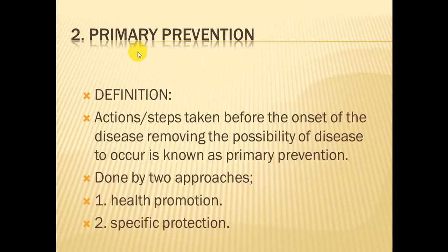The second level is primary prevention. Primary prevention is defined as actions or steps taken before the onset of the disease, removing the possibility of disease occurring. Those actions and steps which can be taken before the disease occurs, to remove the possibility of the disease, are known as primary prevention.